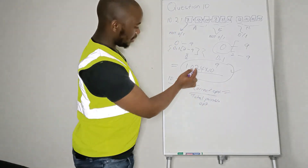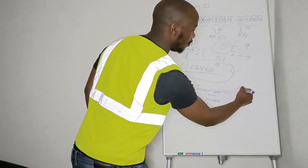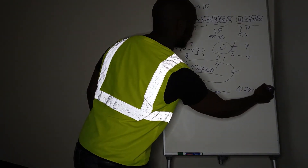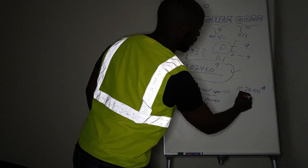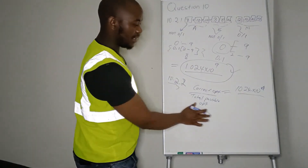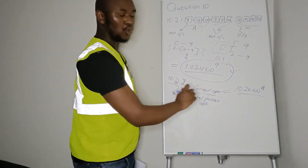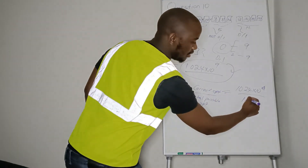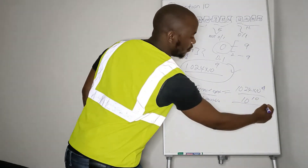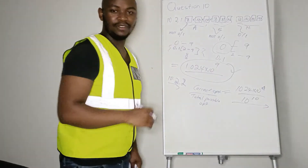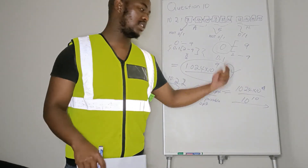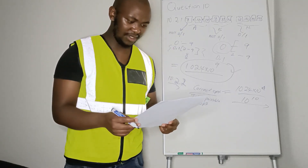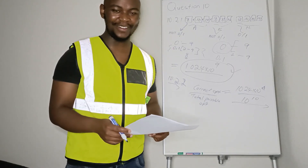The correct options for our case are 1024 times 10 to the power of 9, and we divide that by the total possible options from Question 10.1 which is 10 to the power of 10. You can simplify that to get the final answer. That's it for Question 10, thank you.